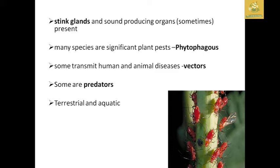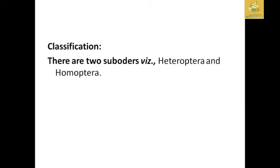Many species are significant plant pests known as phytophagous, feeding only on plant matter. Some transmit human and animal diseases acting as vectors. Some are predators, and they include both terrestrial and aquatic organisms.